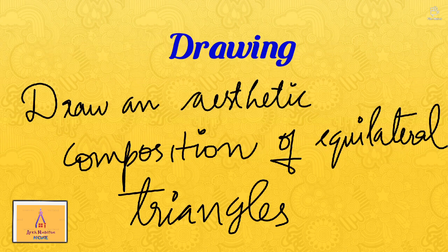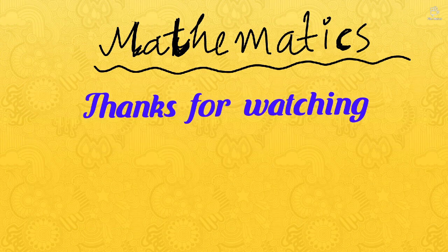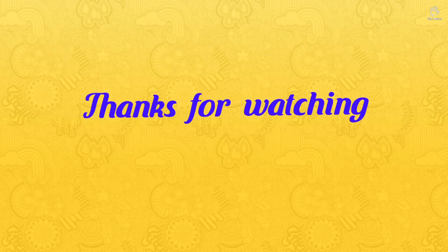The next is a drawing question: draw an aesthetic composition of equilateral triangles. The next mathematics question is: five students of a class have an average height of 150 cm and variance of 18 cm squared. A new student whose height is 156 cm joined them — find the new variance. You can attempt it on your own and comment. Thank you guys for watching — do subscribe, share, and comment.